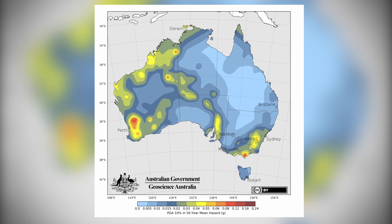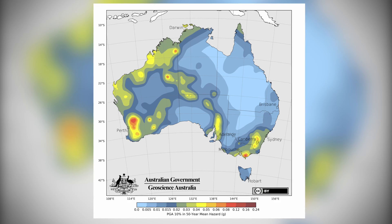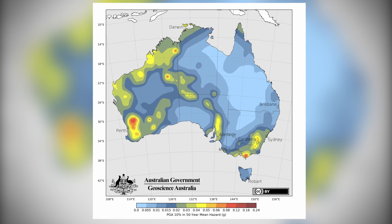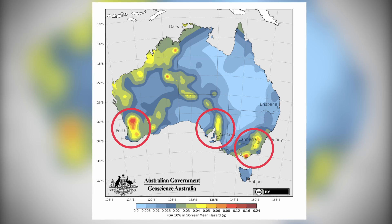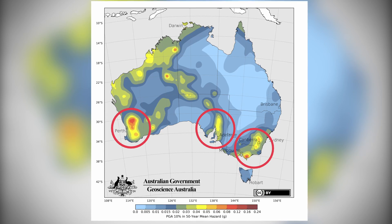At Geoscience Australia, our earthquake scientists are working hard to better understand earthquakes and their effects. With this information, they can create earthquake hazard maps, which are important because they tell us where the riskier areas are so we can build better and stronger buildings in those places. Thank you for joining me here at Geoscience Australia. Stay curious, and if you want to learn more, head over to our website or watch our other videos. Bye for now.